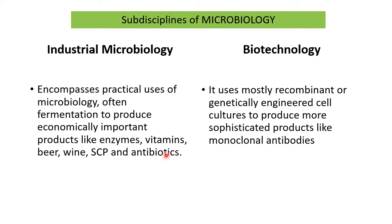For example, enzymes are produced by all microbes, but the enzyme system may differ according to their habitat and capacity. Only starch-hydrolyzing bacteria can produce amylase — not all bacteria will produce amylase. So we identify those particular microbes that have the capacity to produce such enzymes and use them for large-scale enzyme production.